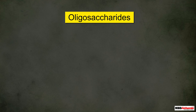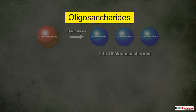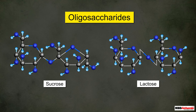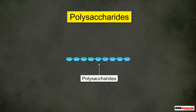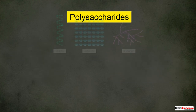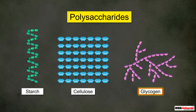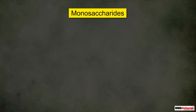Oligosaccharides are the carbohydrates which give two to ten monosaccharide molecules on their hydrolysis. Some examples of oligosaccharides are sucrose and lactose. Polysaccharides are the carbohydrates which contain a large number of monosaccharides; a large number of monosaccharide units are obtained from the hydrolysis of polysaccharides. Some common examples of polysaccharides are starch, cellulose, and glycogen.